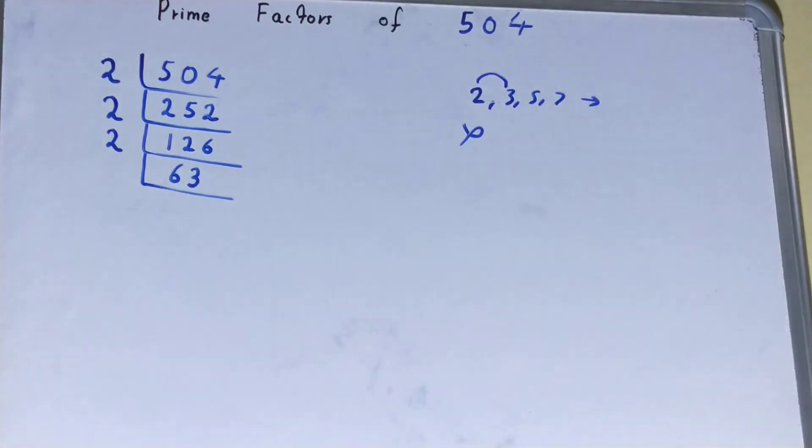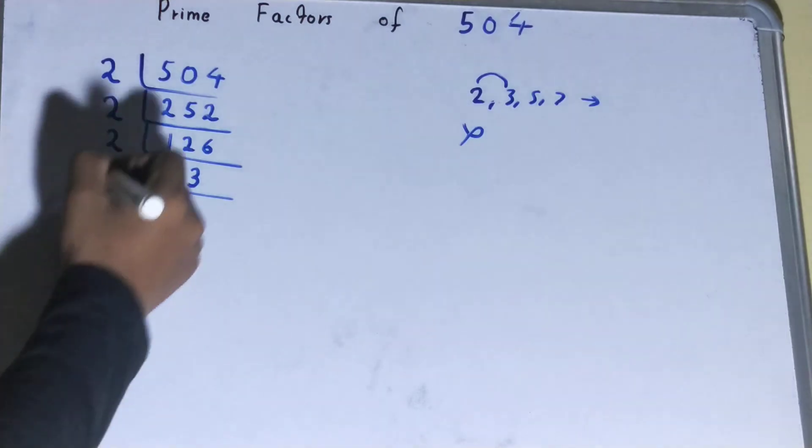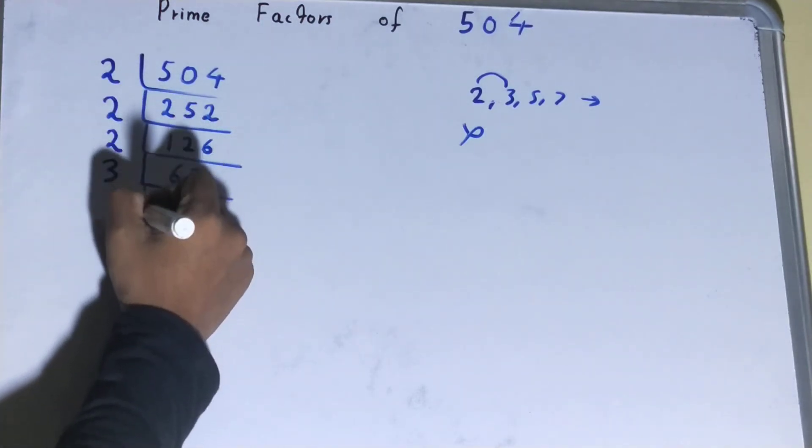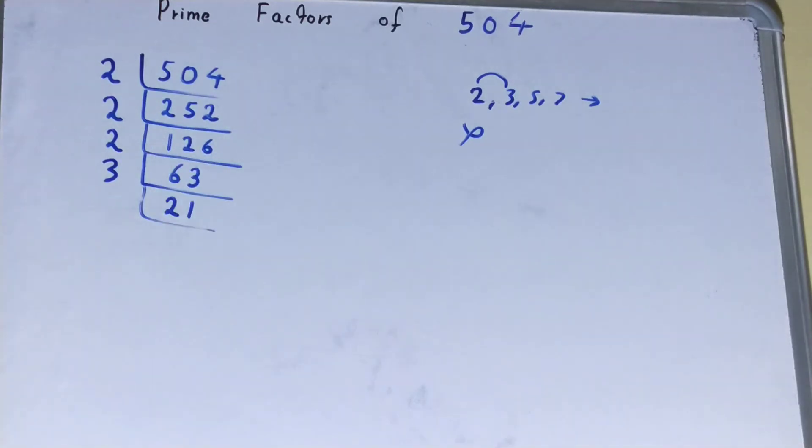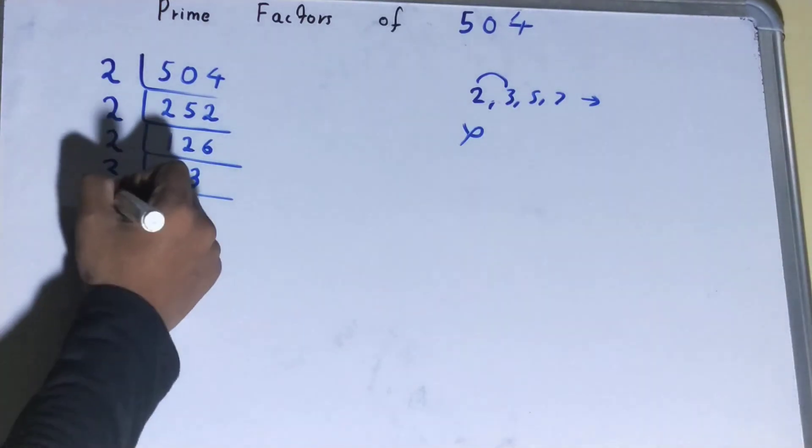Is the number 63 divisible by 3? Yes it is divisible. So divide it, you will be left with 21. Now, is the number 21 divisible by 3? Yes it is divisible. So divide it, you will be left with 7.